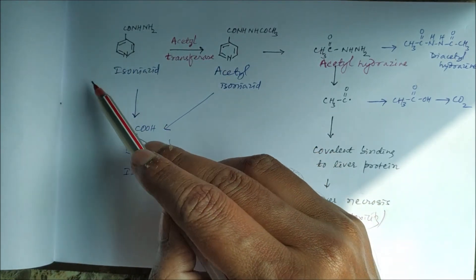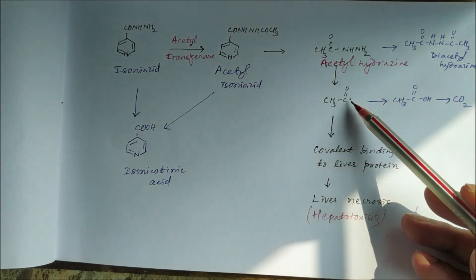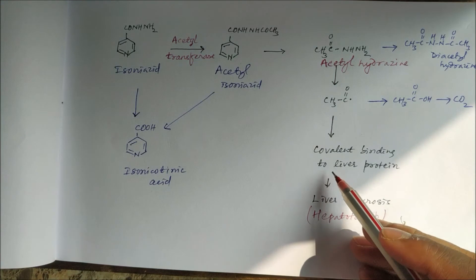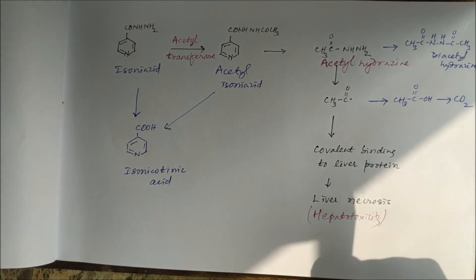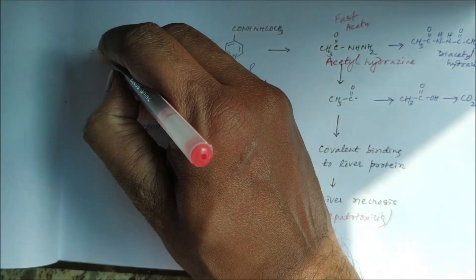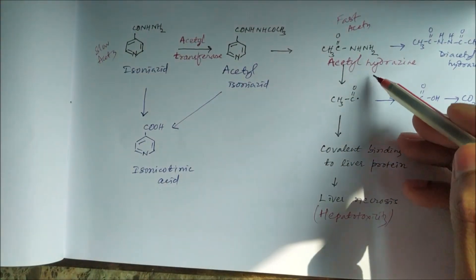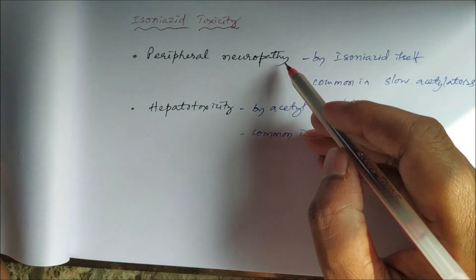In slow acetylators there is accumulation of isoniazid, which causes peripheral neuropathy. Acetylhydrazine, by providing its acetyl group causing covalent binding to liver proteins, causes hepatotoxicity, which occurs in fast acetylators. The two common side effects of isoniazid are therefore peripheral neuropathy and hepatotoxicity.